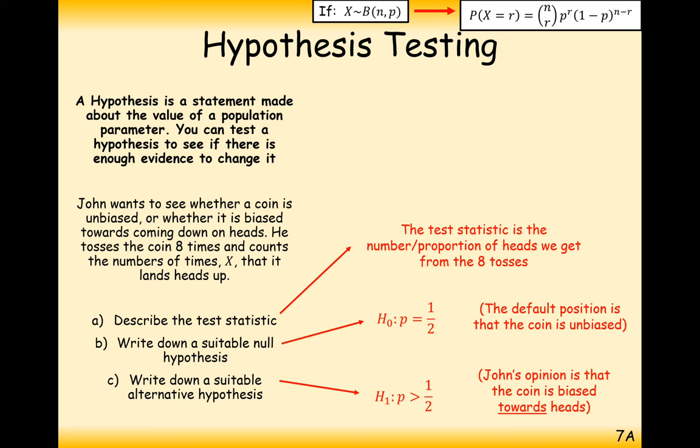If it just said it's a biased coin and we didn't know, then we would just have to write that the probability is not equal to 1 half. But in this case here it does say it comes down on heads, biased towards coming down on heads, so therefore the probability is greater than 1 half.